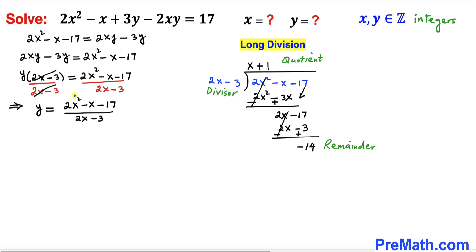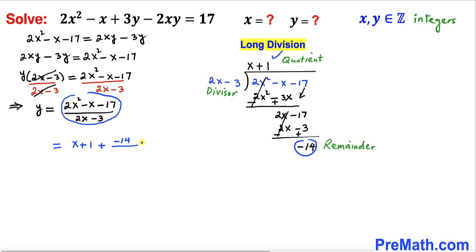Therefore the rational function on the right hand side can be written as x plus 1 plus (negative 14) divided by (2x minus 3). We still have y on the left side, so y equals x plus 1 plus (negative 14) divided by (2x minus 3).